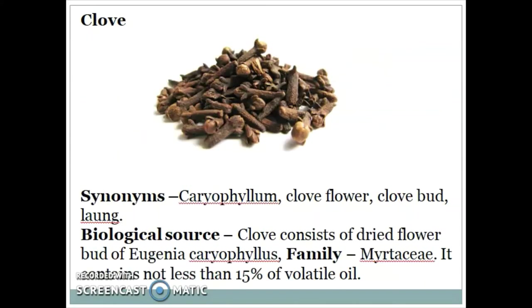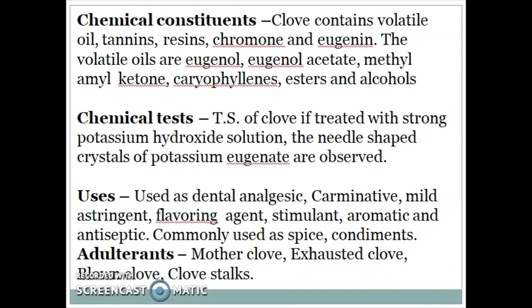Next drug is Clove. Synonym: caryophyllum, clove flower, clove bud, or laung. Biological source: clove consists of dried flower buds of Eugenia caryophyllus, family Myrtaceae. It contains not less than 15% of volatile oil. Chemical constituents: clove contains volatile oil, tannins, resins, chromone, and eugenin. The volatile oils are eugenol, eugenol acetate, methyl amyl ketone, caryophyllene, esters, and alcohols.